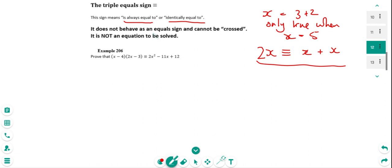So if we've got to prove something with a triple equals in it, then really what we need to do is work on just one side of it. So I'm going to work on the left-hand side of this one. So the left-hand side is X minus 4, 2X plus 2X minus 3. And what I'm going to try and do is manipulate it so that it becomes the same as the right-hand side.